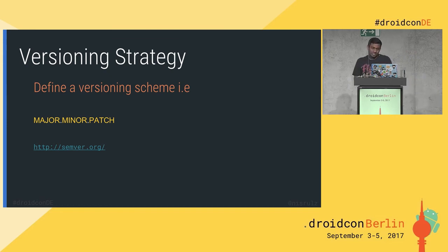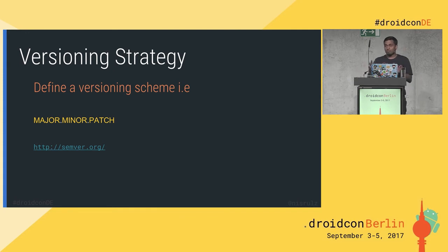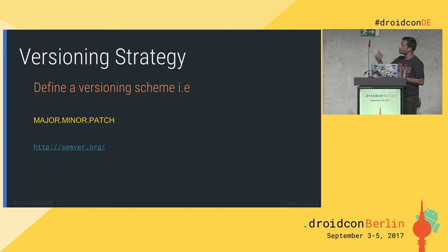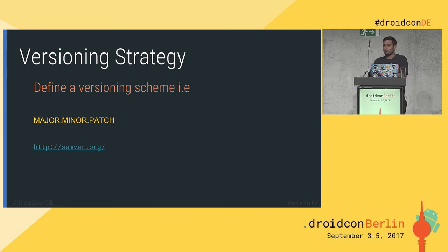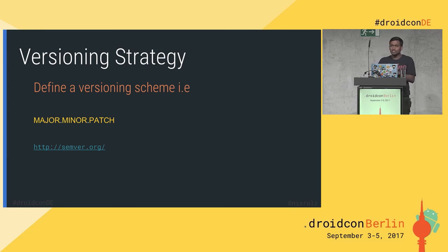Versioning strategy: you don't want a version like '1.2abc123' — no one remembers that. Use semantic versioning from semver.org: major.minor.patch. If a change breaks something, bump the major version. If it adds new functionality, bump the minor version. If it's a small bug fix that doesn't change the public API, just bump the patch version. That's a simple rule that most people should be following.